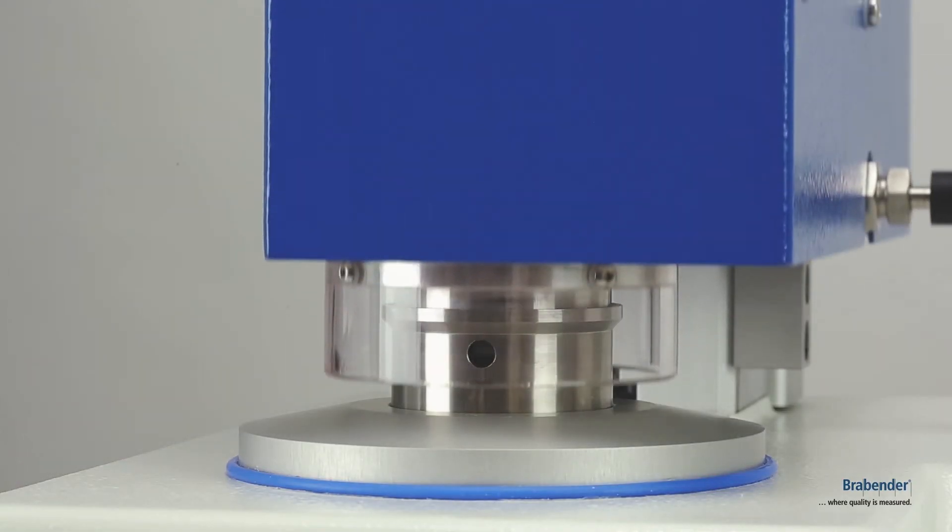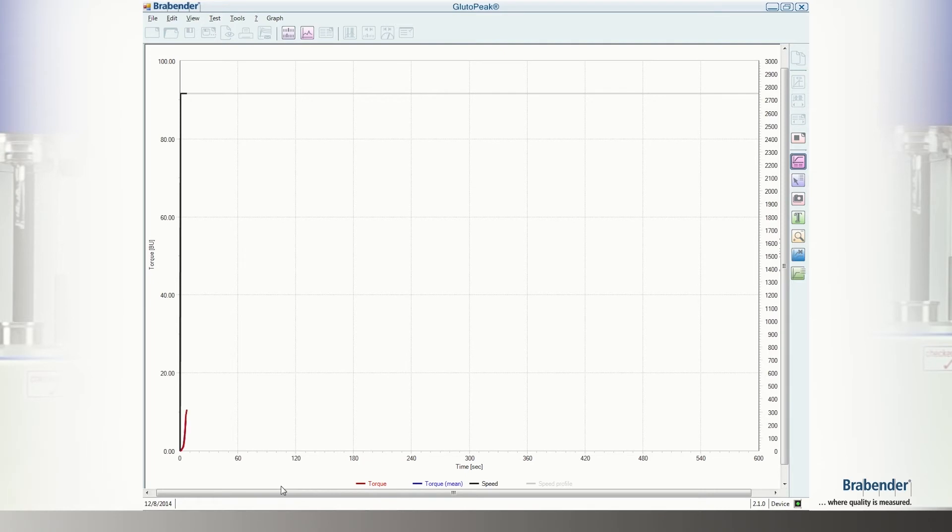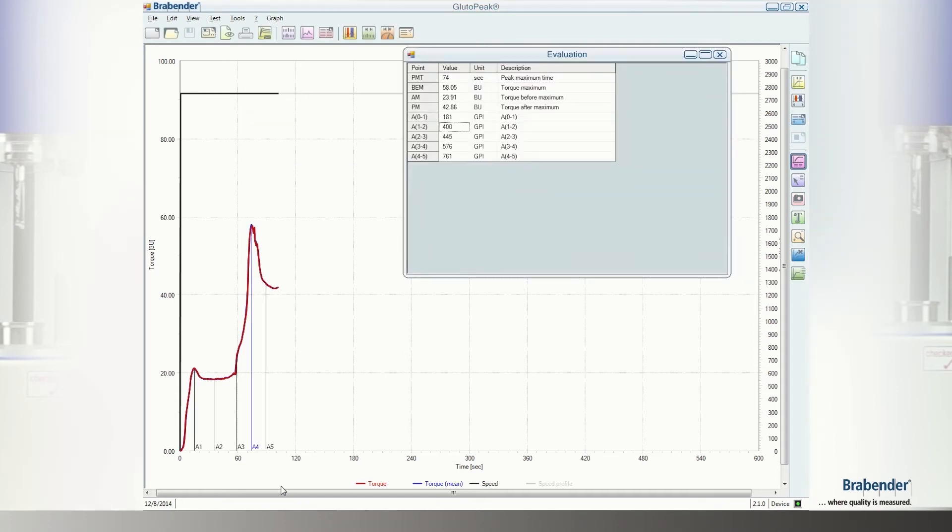Funnel 3 to 10 grams of the sample material and lower the measuring head. The application starts automatically and records the graph in a few minutes. On average, 10 tests per hour can be carried out. Thus, the Gluto Peak evaluates quality by using cutting-edge technology.